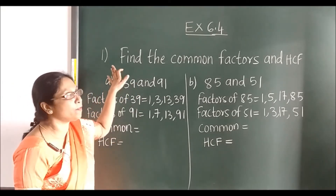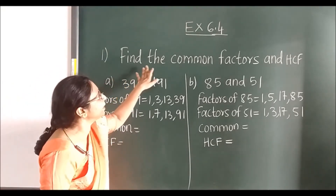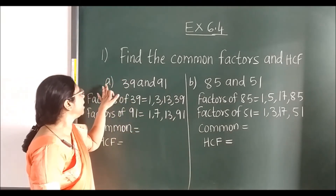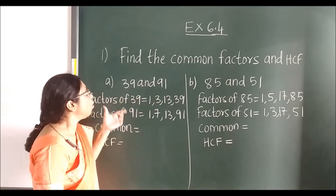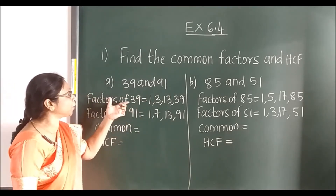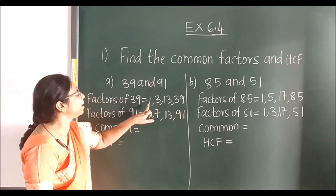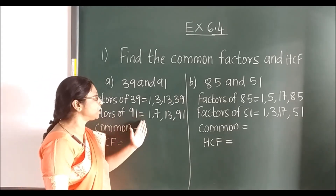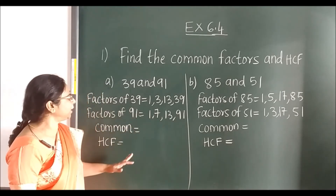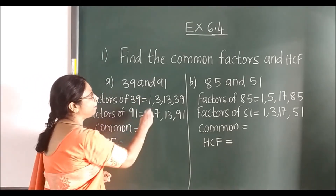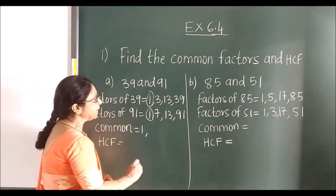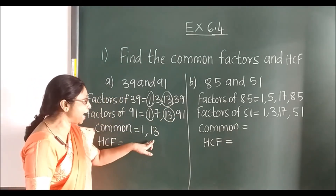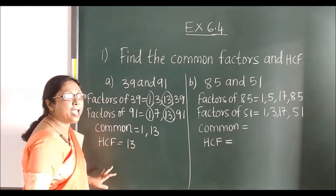Now the first question of exercise 6.4: find the common factors and HCF. HCF is Highest Common Factor. For sum A — 39 and 91. Factors of 39: it comes in 1, 3, 13, and 39. Factors of 91: it comes in 1, 7, 13, and 91. The common factors are 1 and 13. The highest is 13, so HCF is 13.